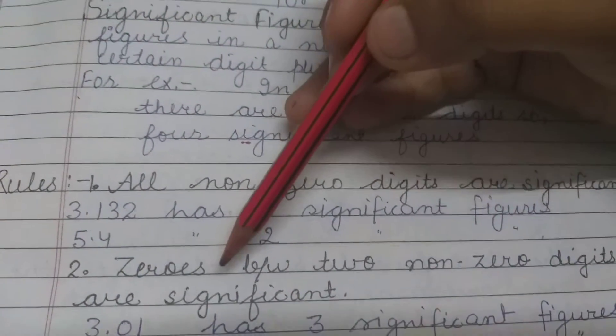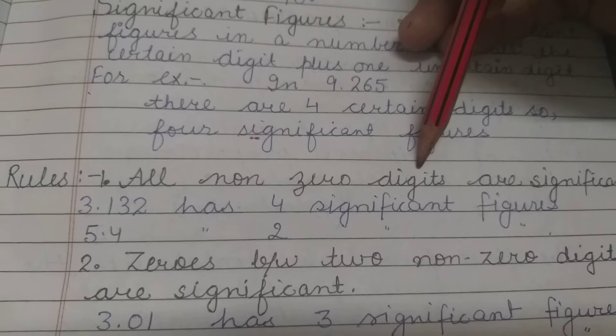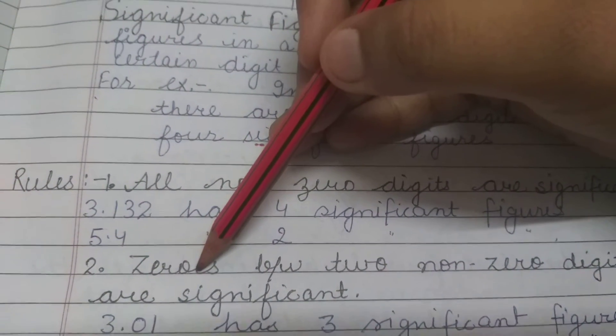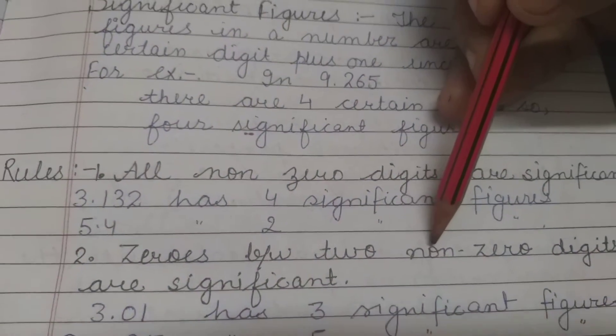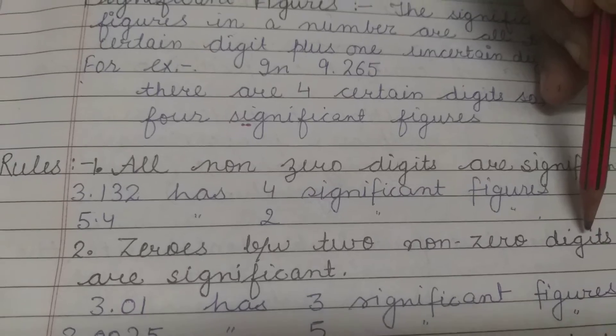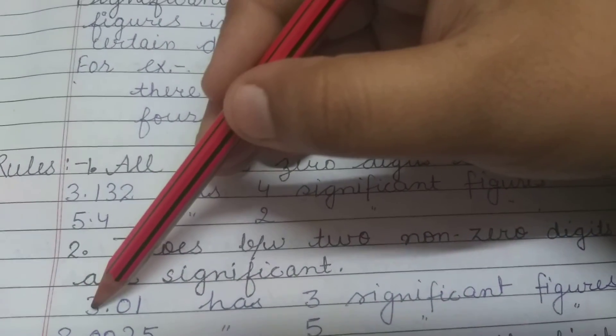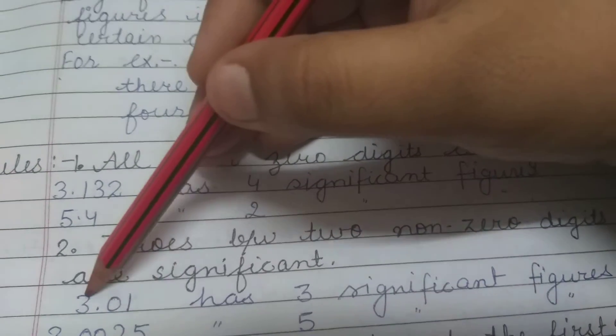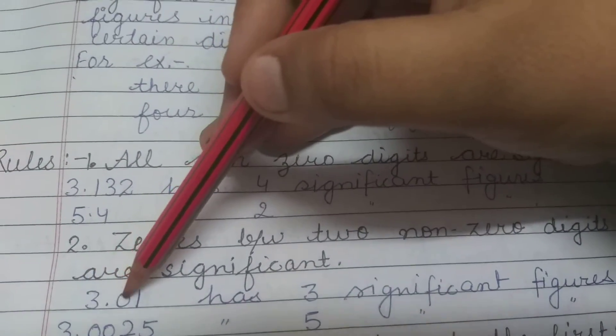Second rule: zeros will be significant if they are between two nonzero digits. For example, 3.01—the zero is between 3 and 1, so we have three significant figures: 3, 0, and 1.